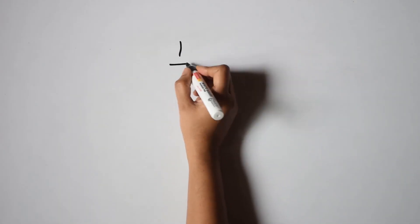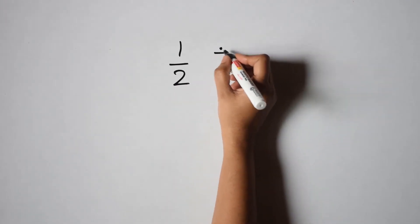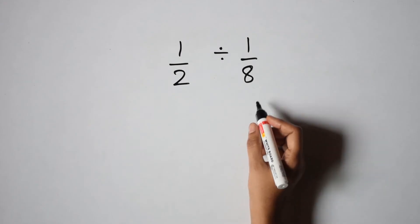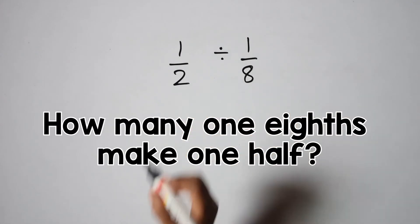Let's take another example. 1 by 2 divided by 1 by 8. How do we read this? We read this as how many one eighths make one half?